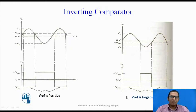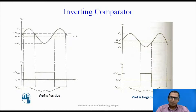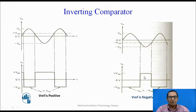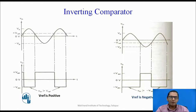We can also see what happens when V reference is negative. In this case, the same rule applies. For the portion where the input at the inverting terminal is less than that of the non-inverting terminal, the output is negative saturation. When the inverting input falls below the minus 1 volt reference, the output becomes positive saturation. So we have seen the two types of circuits: the inverting comparator and the non-inverting comparator.